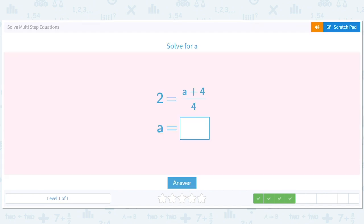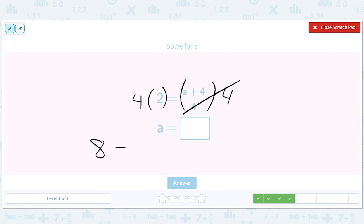Let's multiply both sides by 4 to clear this denominator. We'll clear that. We'll get 8 equals a plus 4. Now let's subtract 4 from both sides. And we get a equals 4.